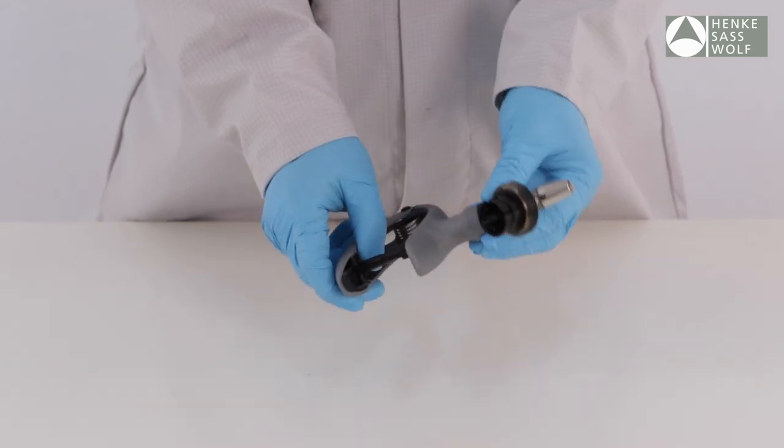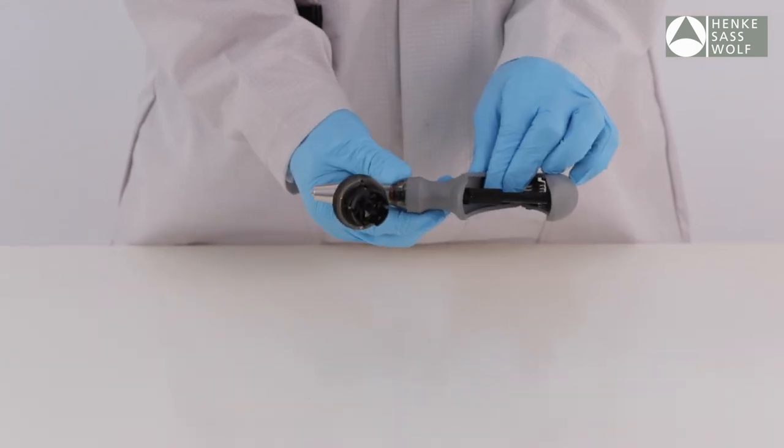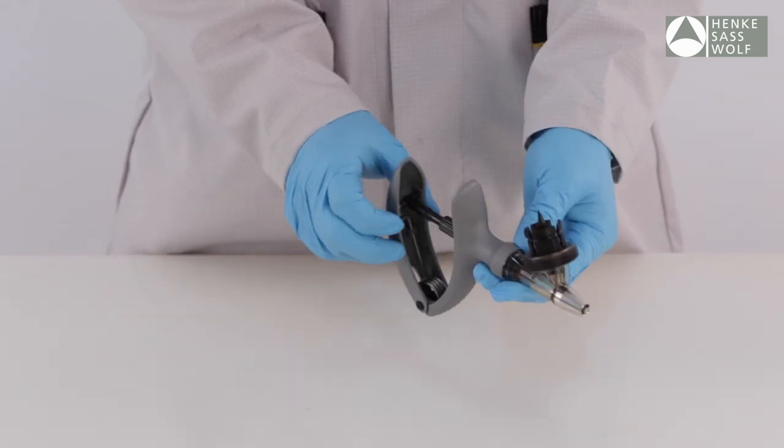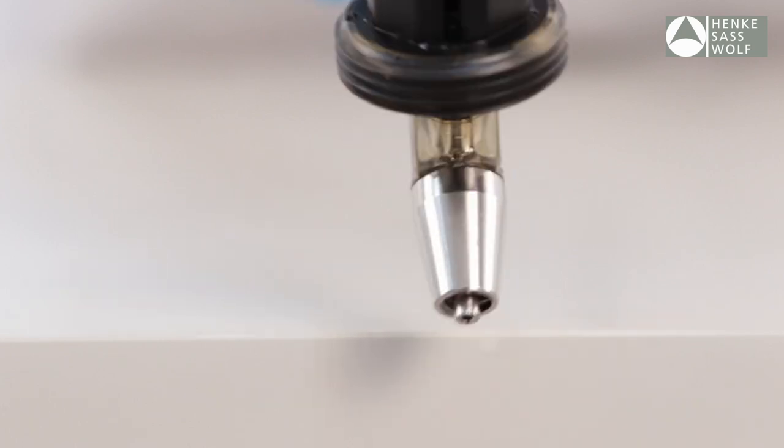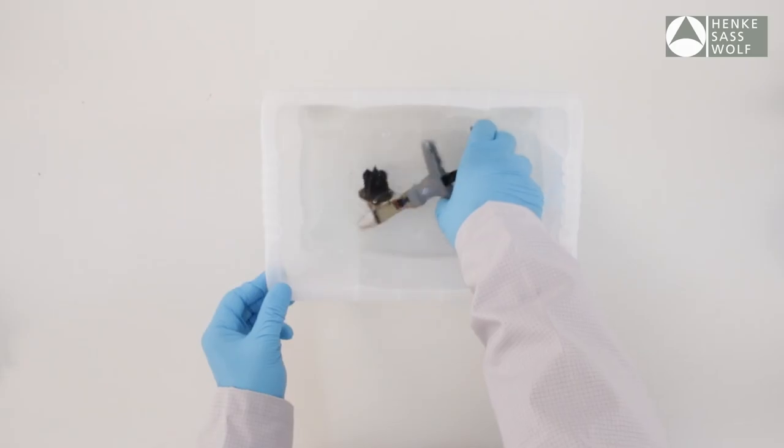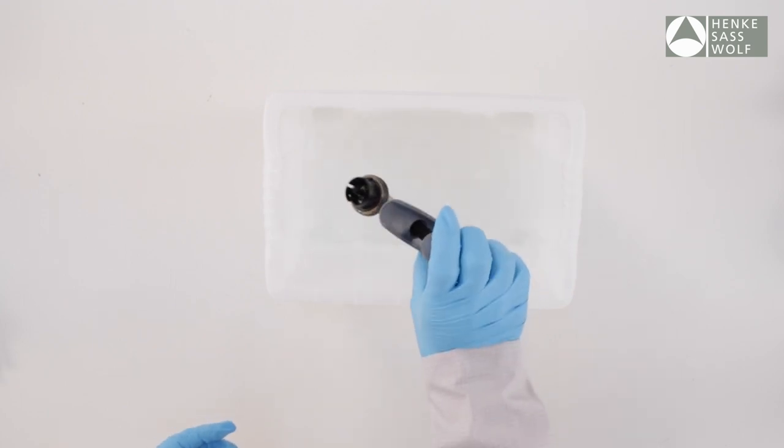In case the syringe is drawing air, the front valve behind the metal needle nut might be closed. The valve can be released by gently tapping the front of the syringe against the edge of a table and afterwards rinsing the syringe with warm water.